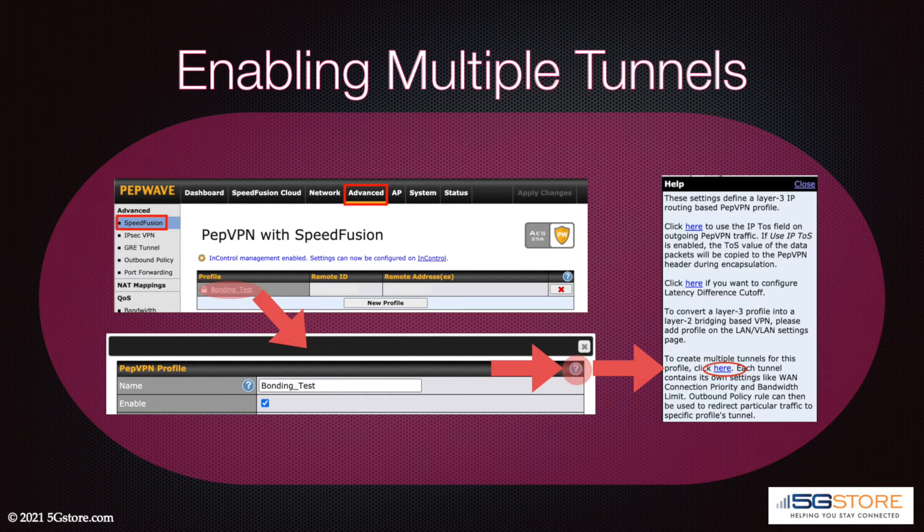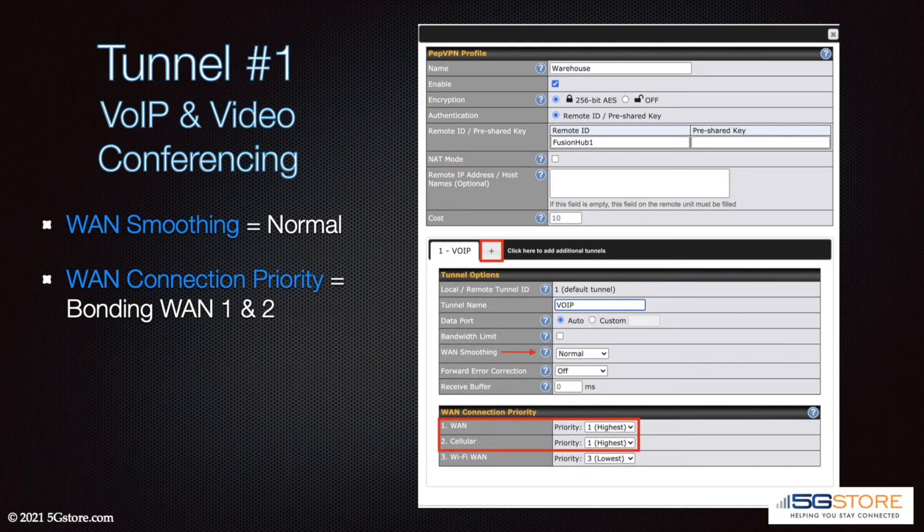Click on the profile name or create a new profile. Find the blue question mark icon at the top right corner and click this link to display the multiple tunnel option.